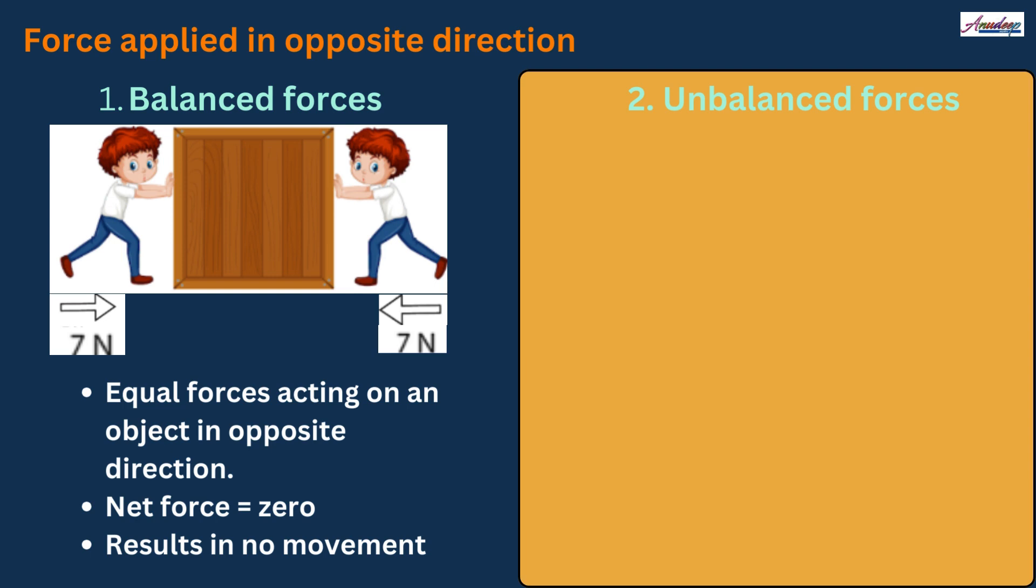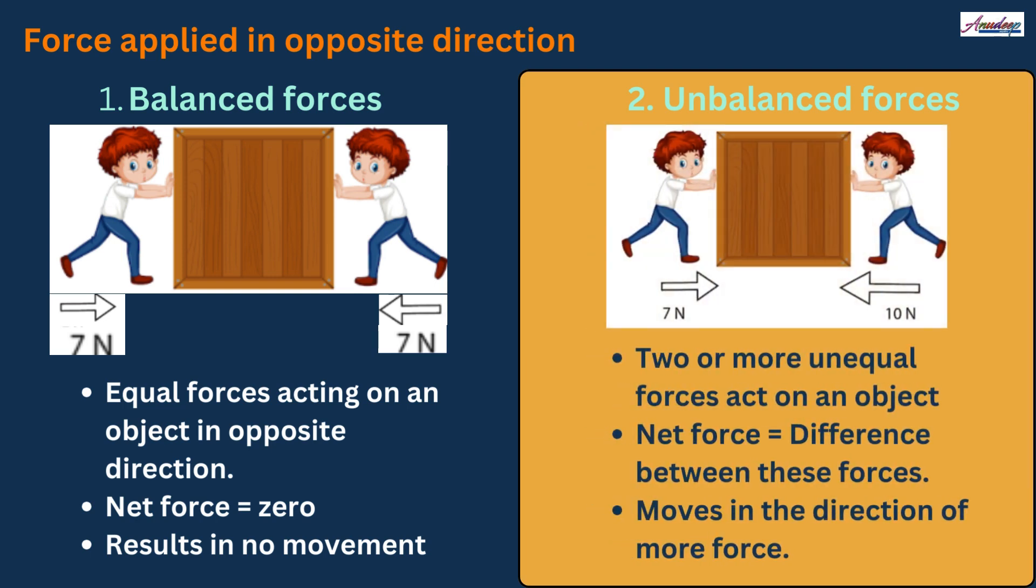Now second, unbalanced force. Suppose your friends are stronger than you and they are pushing the box with more force. Then the box will move in the direction in which the greater force is applied. And in this case, the two forces are not equal and are called unbalanced forces. In this case, the net force will be equal to the difference between these two forces. In this figure, the box will move in the direction where the boy with 10 Newton force is pushing and the net force will be equal to 10 minus 7 that is equal to 3 Newton.